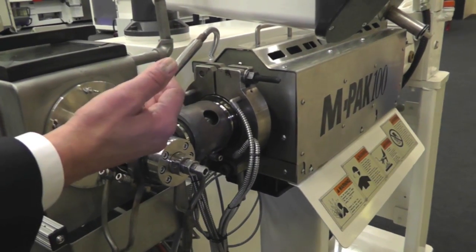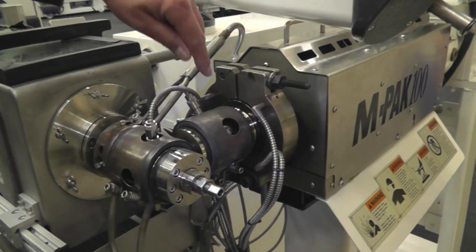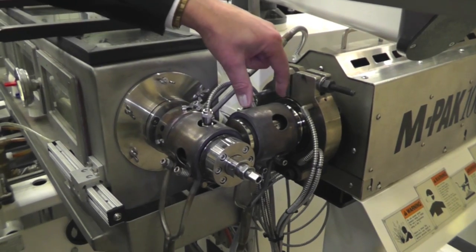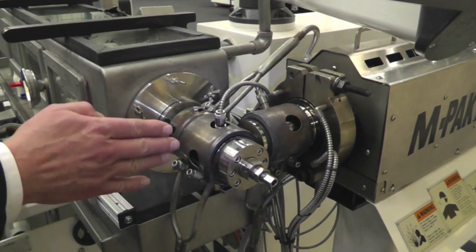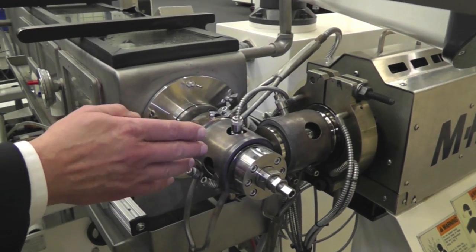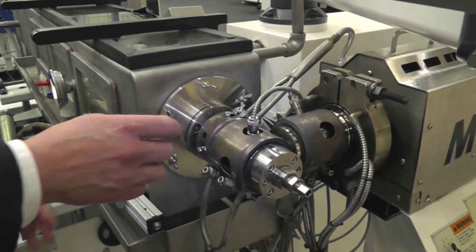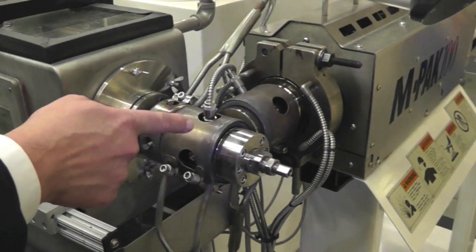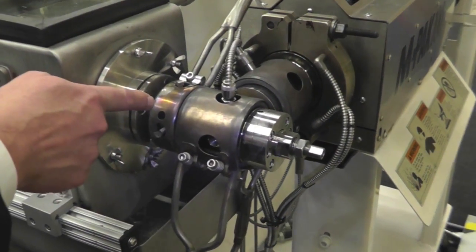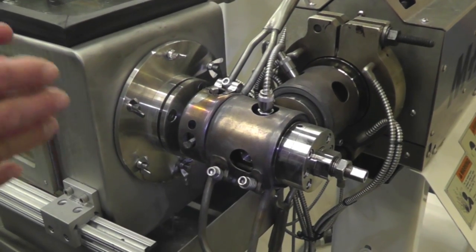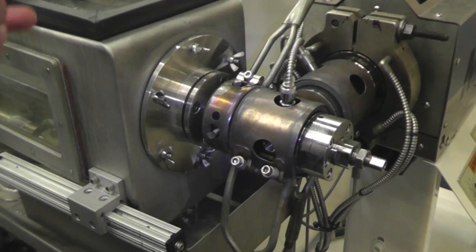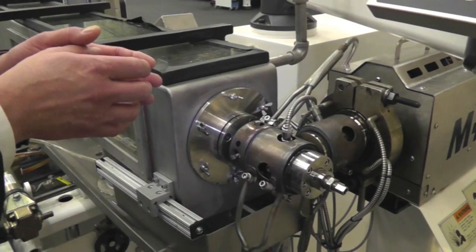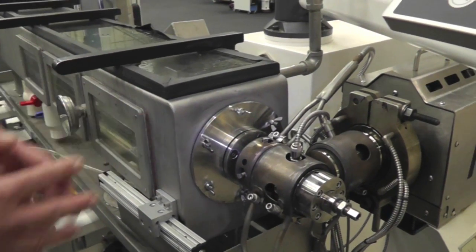We come out to the exit end of the extruder into what we call cross tooling, where the melt flow is going to come in. It's going to go into the cross head where there's tooling which will change that material flow from this direction to the inline direction. Inside we have a tip and a die. The tip forms the inside of the tube, the die forms the outside of the tube, and then it exits into the tank.